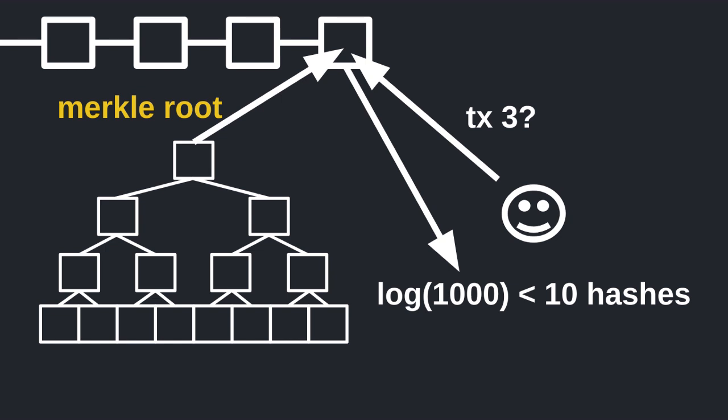However, using a Merkle tree she only needs log₂ of 1000, which is about 10 hashes. So in summary, a Merkle tree allows you to create a small cryptographic proof that certain data is included in a set of data, and using this property you can prove that a transaction was included in a block.